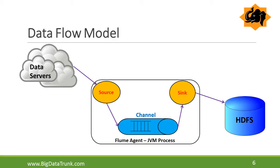This diagram shows a clear picture of the Flume data flow model. Flume consists of four important components: Flume agent, source, channel, and sink. A Flume agent is a JVM process that hosts the components through which events flow from an external source to the next destination.